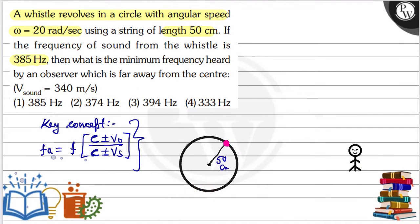When the whistle reaches here and the velocity is directed away, the person will hear the minimum frequency. The velocity formula is basically omega into r.